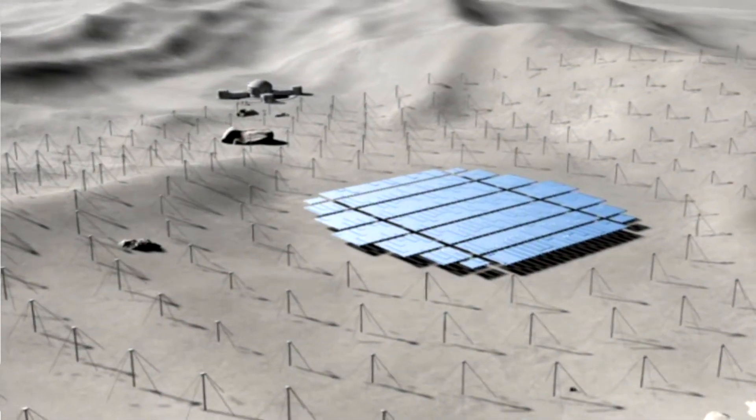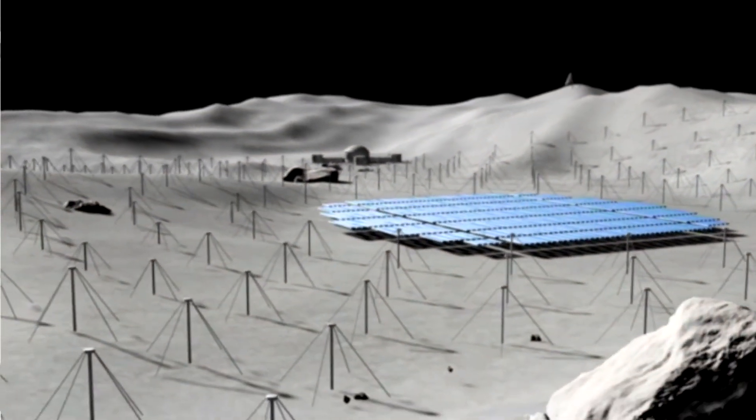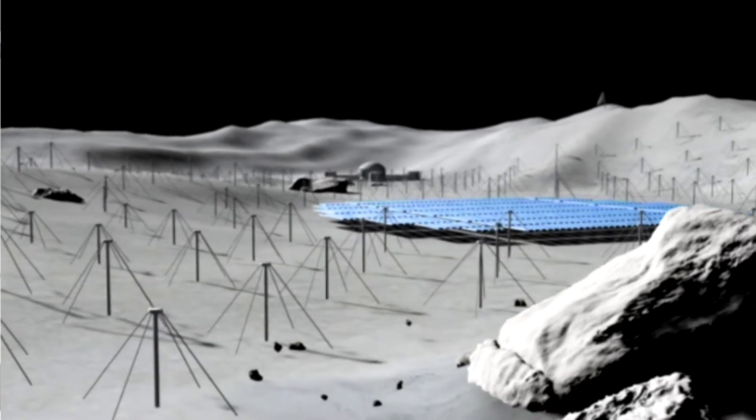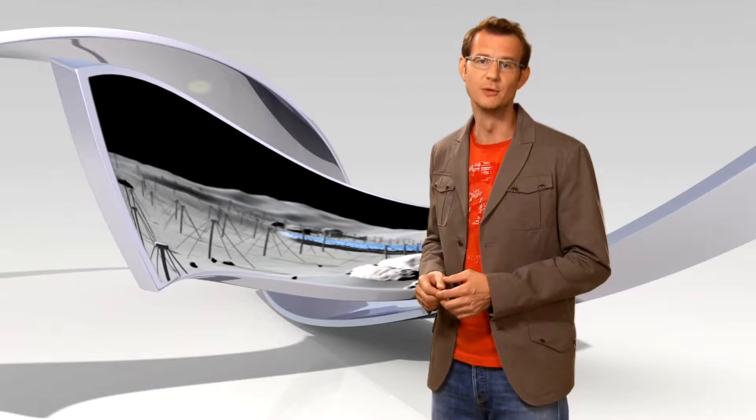Radio astronomers want to put a LOFAR-like array of small antennas onto the surface of the Moon, as far away as possible from terrestrial sources of interference. Who knows, one day there might even be a big optical telescope on the far side of the Moon.